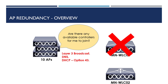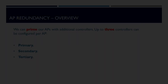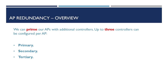Thankfully, we can speed this up and improve it. In order to combat the amount of time it takes for our APs to fail over to another controller, we can prime them with additional controllers to join. In essence, what we're doing is telling our APs which controller to associate to if WLC01 becomes unavailable. On Cisco access points, we have the ability to configure up to three wireless controllers on each AP.